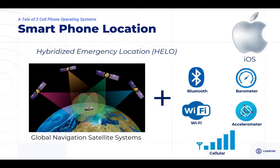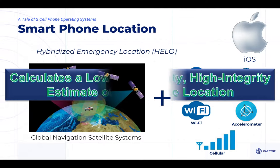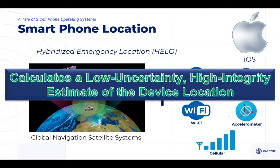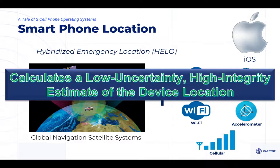Apple does a calculation called Hybridized Emergency Location, or HELO — you've probably heard that acronym before. The goal of the HELO calculation is to have a low-uncertainty, high-integrity estimate of the device location. From our experience using device location, we see it's usually within 10 meters or 30 feet — a lot more accurate than 1,500 meters. This is one of the reasons why people are anxious to get to a device-based location.